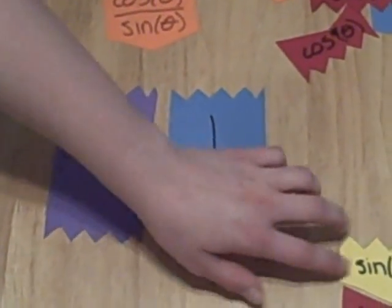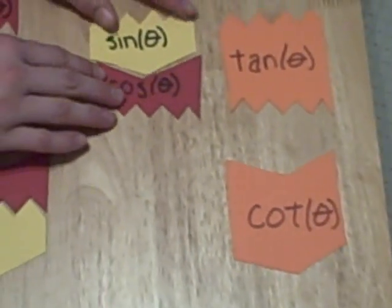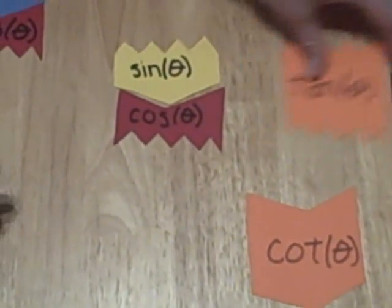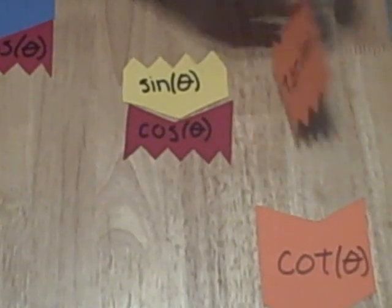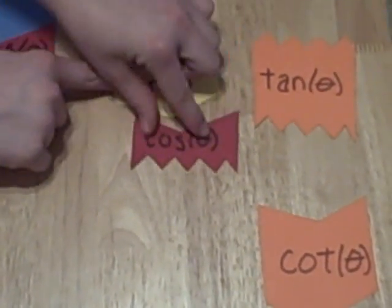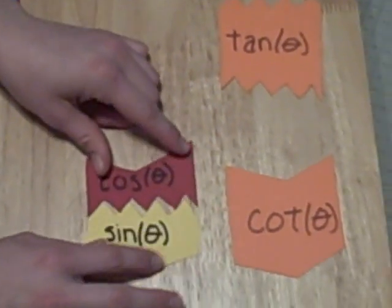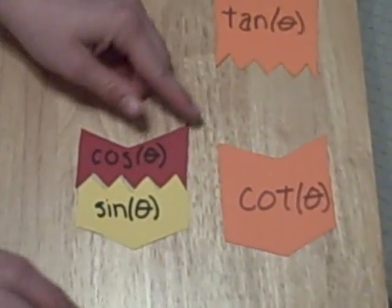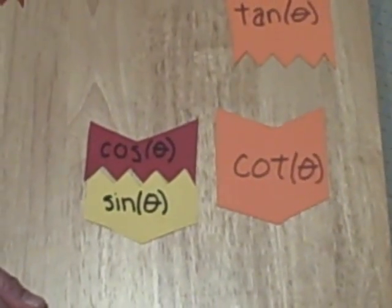Then, sine and cosine can go on top of each other to form the same shape as tangent. We'll flip this over and see that that is true. We can also reverse their order and have cosine over sine, which then makes the same shape as cotangent.